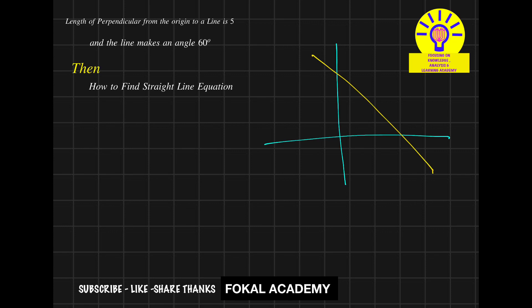So according to the problem, from that line to the origin, the length is given as 5 units. So from origin to the required line equation, the length is 5 units. And as well as the angle is given as 60 degrees. So angle is 60 degrees. So this is nothing but P and this is alpha.